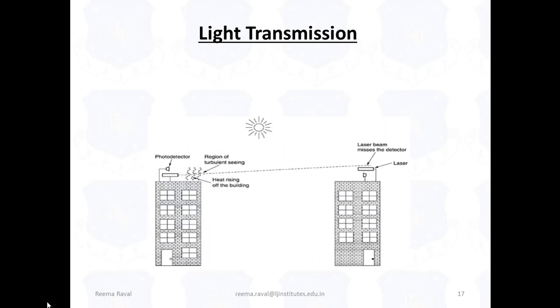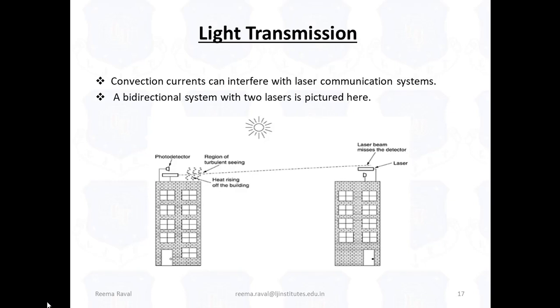Next is light transmission. Convection currents can interfere with laser communication systems. As shown over here, this is the light transmission. And unguided optical signaling has been used for centuries. A modern application is to connect the LAN's in two buildings via lasers mounted on their rooftops. Coherent optical signaling using lasers is inherently unidirectional. So, each building needs its own laser and its own photodetector. This scheme offers very high bandwidth and very low cost. It is also relatively easy to install and unlike microwave, it does not require an FCC license. So, this is a bidirectional system with two lasers which is pictured here.